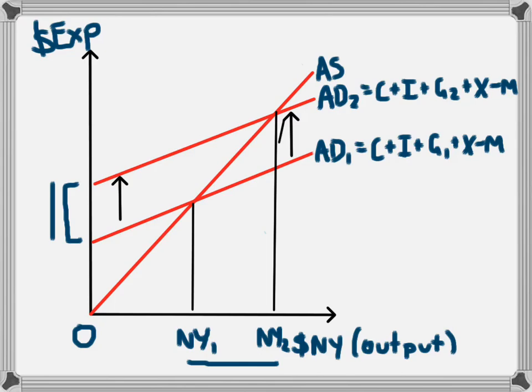The government will use an expansionary fiscal policy if they want to increase national income, and this may be in order to promote economic growth or reduce unemployment.